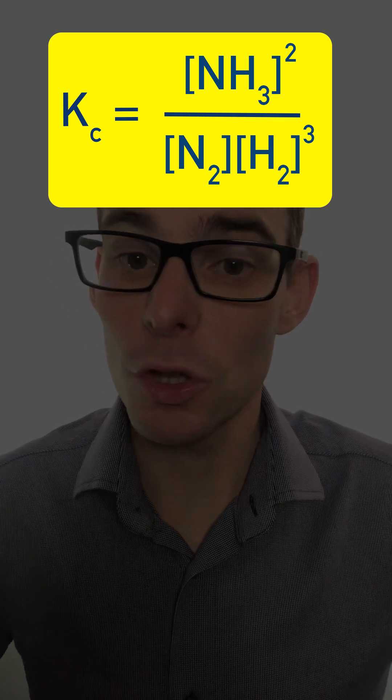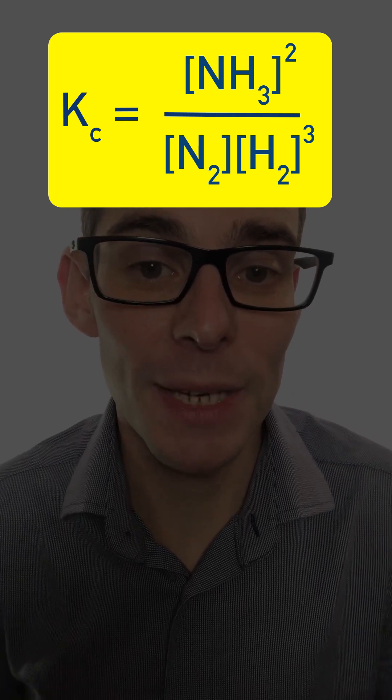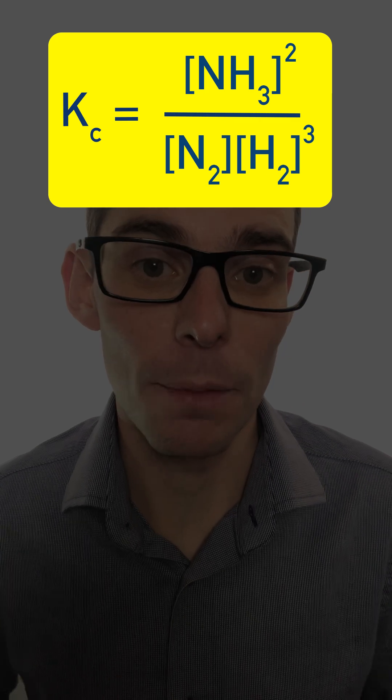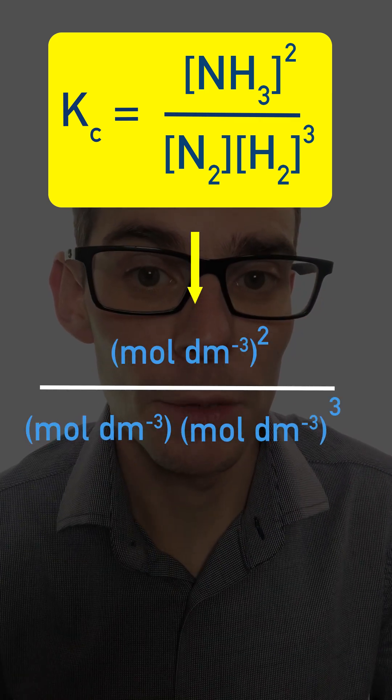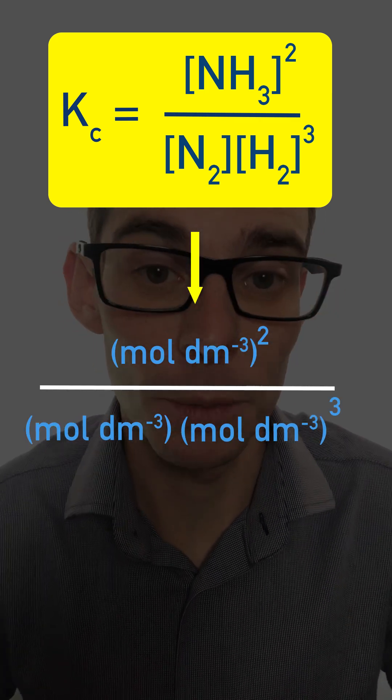All we need to do is substitute in mole per decimeter cubed into this expression. So now we've got mole per decimeter cubed squared at the top, mole per decimeter cubed at the bottom times mole per decimeter cubed cubed.